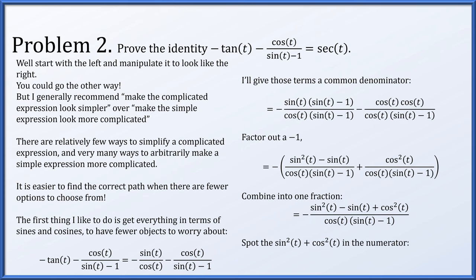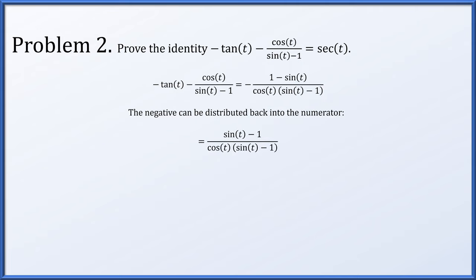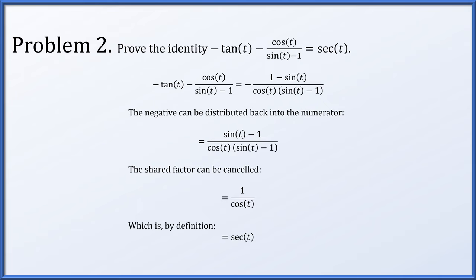In the numerator, observe we have sine squared t plus cos squared t, which we can replace with 1 — that's our standard Pythagorean identity. So far we have negative 1 minus sine t over cos t times sine t minus 1. We're trying to eventually manipulate this to look like secant of t. Now that negative can be redistributed back into the numerator to give us sine t minus 1 over cos t times sine t minus 1. We have a shared factor of sine t minus 1, so we cancel it, leaving 1 over cos t, which by definition is exactly the secant of t.